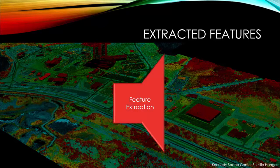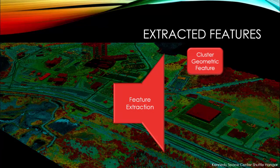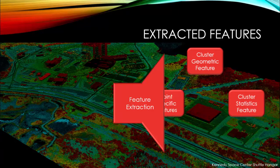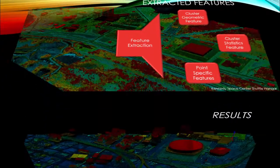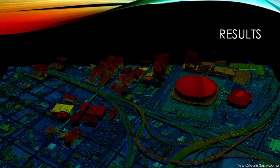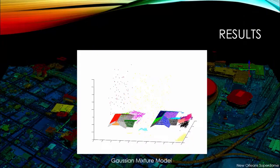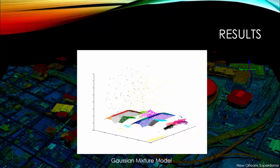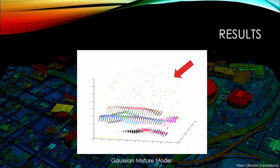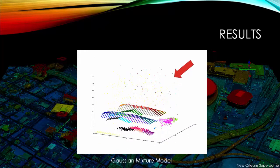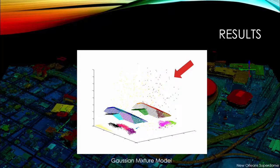These features act as unique identifiers for points to be utilized in classification. We extracted features that describe the geometric shape of the cluster, find the statistics of the distances between the data and the cluster, and differentiate a point from its respective cluster. Gaussian mixture model expectation maximization created larger noise clusters than the other two algorithms; therefore, this method should be used when performing binary classification on noise.